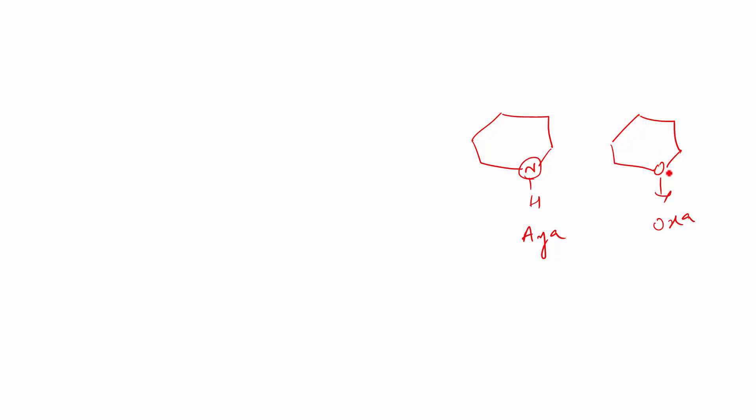And if you remember, in the case of cyclic ethers, this was given 1 and then the numbering done accordingly. The same rule applies here. This is numbered 1. And in the case of cyclic ethers, we used to call it auxa-cyclo-alkane. Here it's going to be aza-cyclo-alkane.